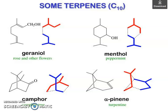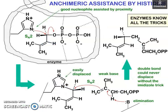Some terpenes include C10 compounds such as geraniol (found in rose and other flowers), menthol (from peppermint), camphor (from the camphor tree), and alpha-pinene. Enzymatic assistance uses a good nucleophile assisted by proximity. It is intuitive how a lone pair of electrons approaches here. Enzymes know all the tricks and can easily displace weak bases — or even use double bonds — in ways that would never occur without enzymatic assistance.